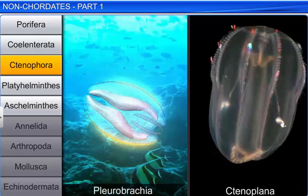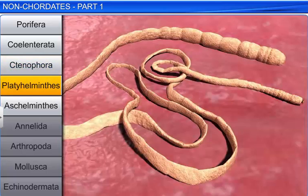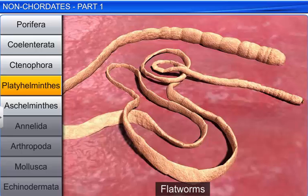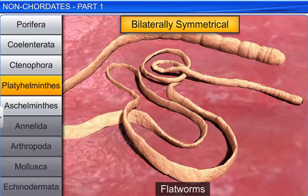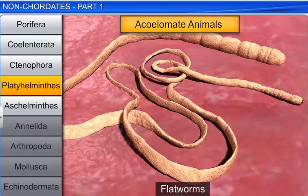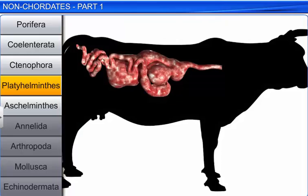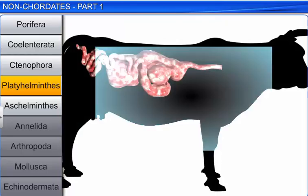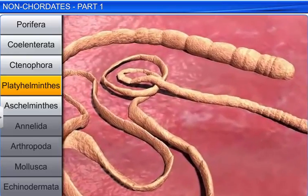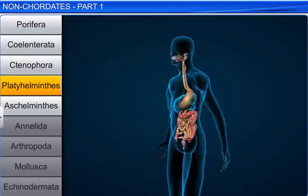The next phylum is Platyhelminthes. These animals have a dorsoventrally flattened body and are therefore called flatworms. They are bilaterally symmetrical, triploblastic, acoelomate animals with an organ level of organization. Flatworms are mostly endoparasites found in the digestive system of animals, including humans.